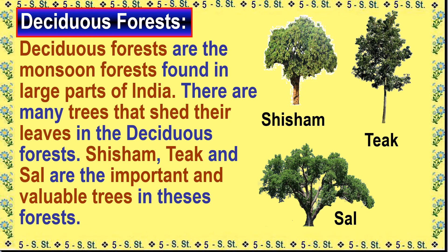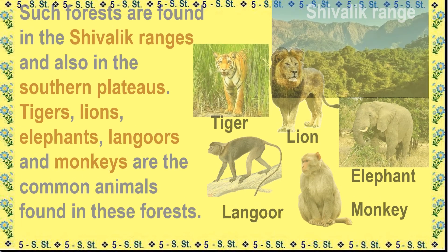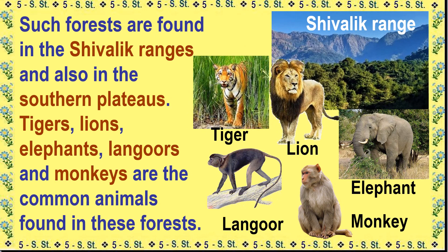Deciduous forests are the monsoon forests found in large parts of India. Many trees shed their leaves in the deciduous forests. Shisham, Teak and Sal are the important and valuable trees in these forests. Such forests are found in the Shivalik ranges and also in the Southern Plateaus. Tigers, lions, elephants, langurs and monkeys are the common animals found in these forests.